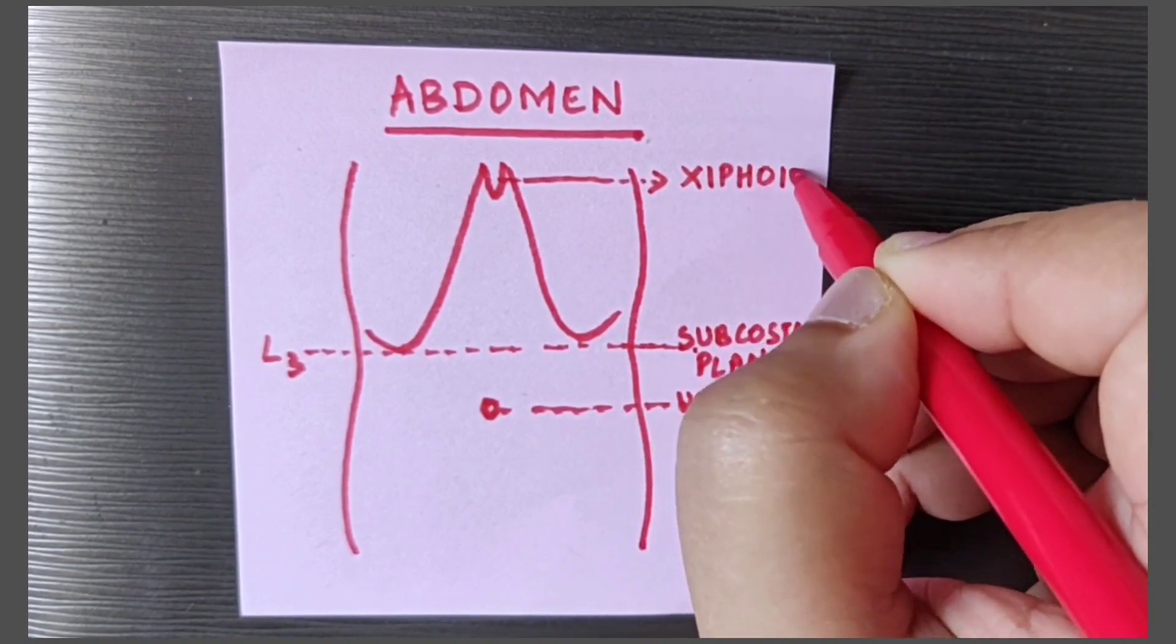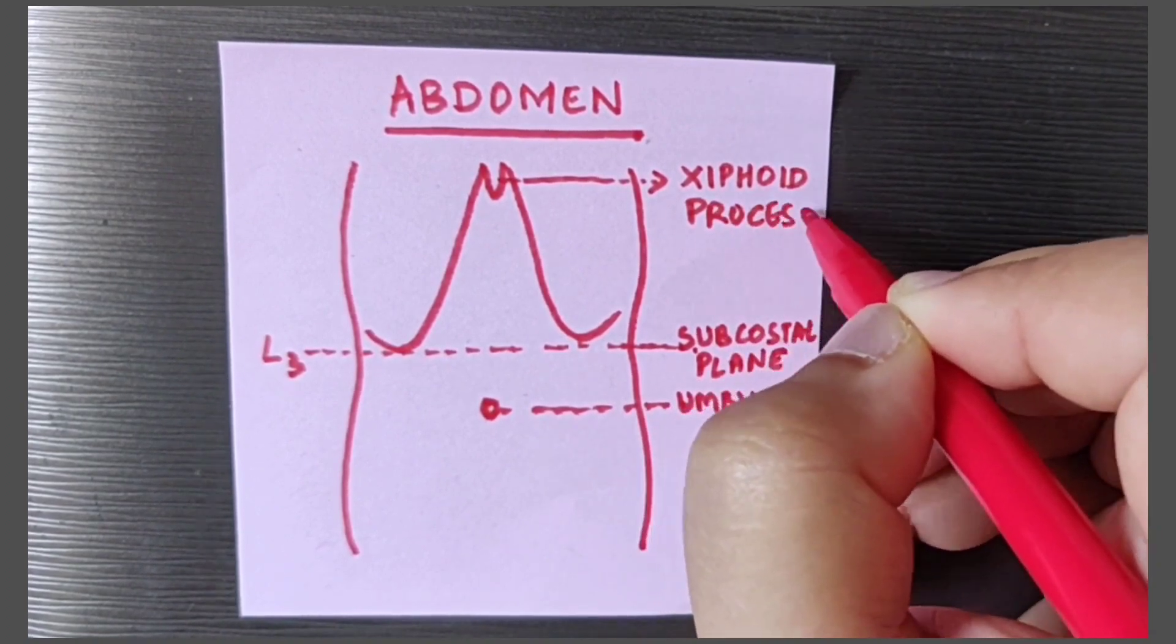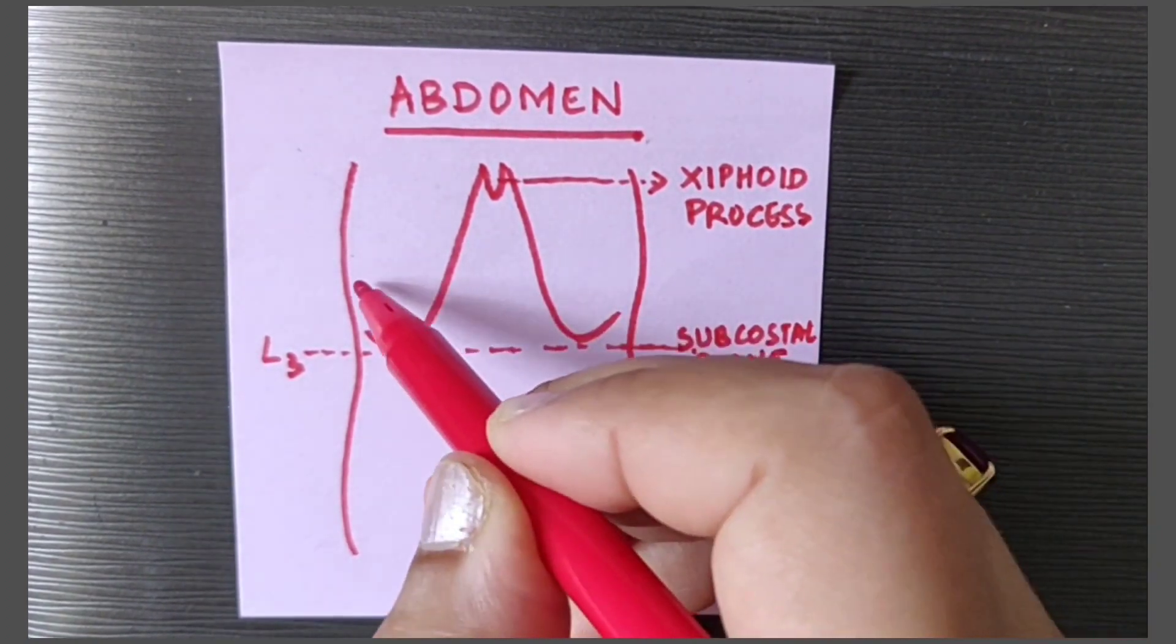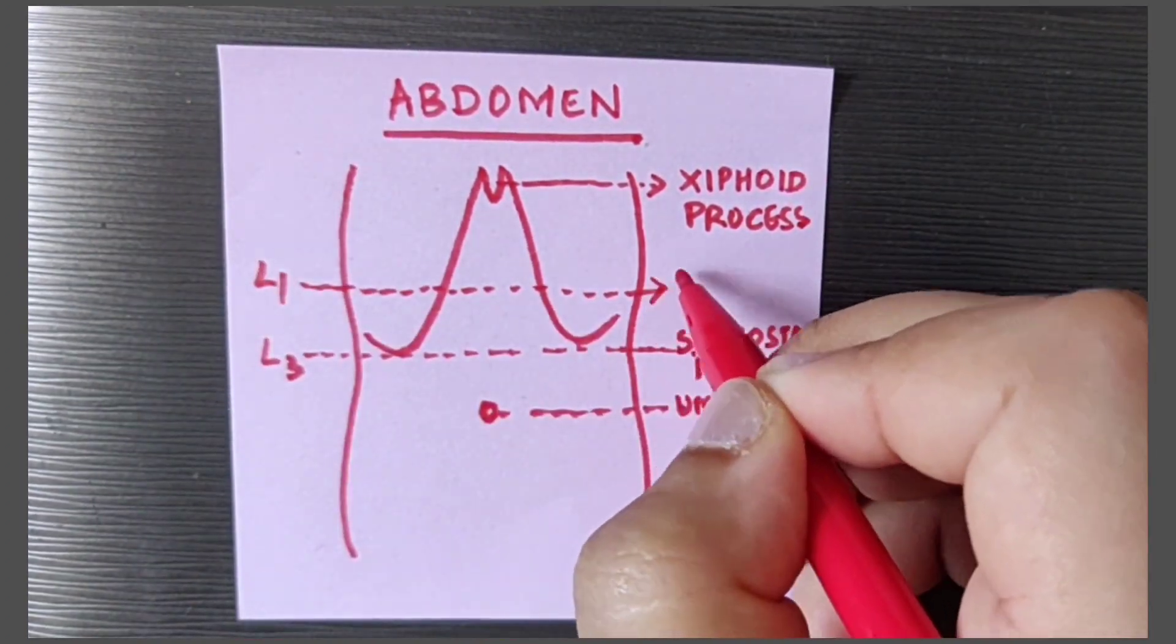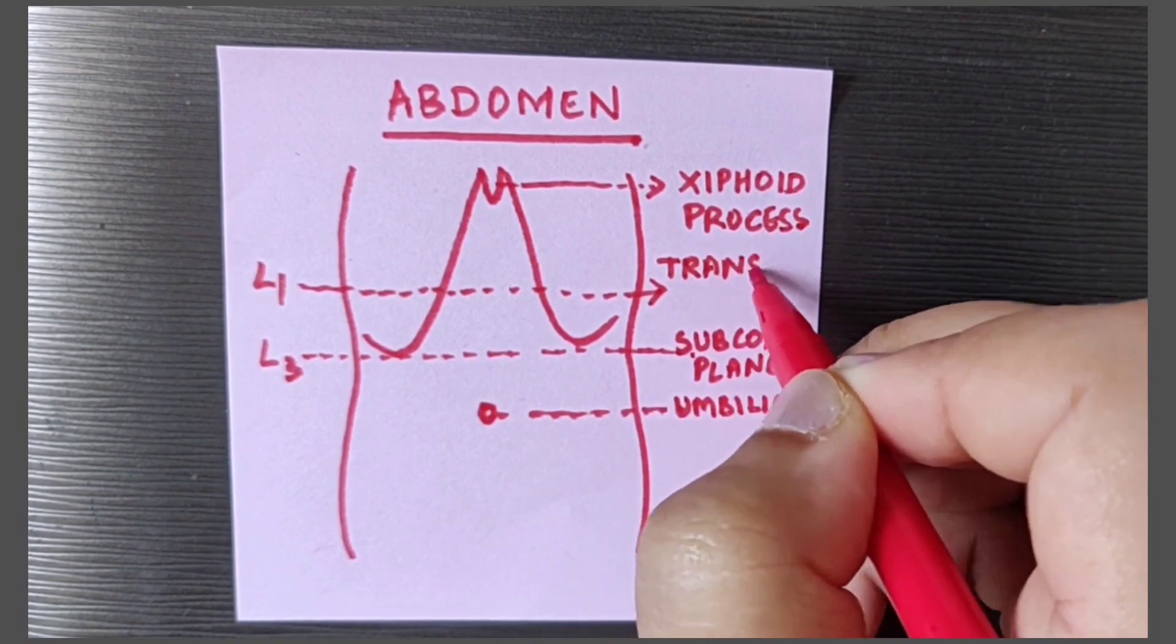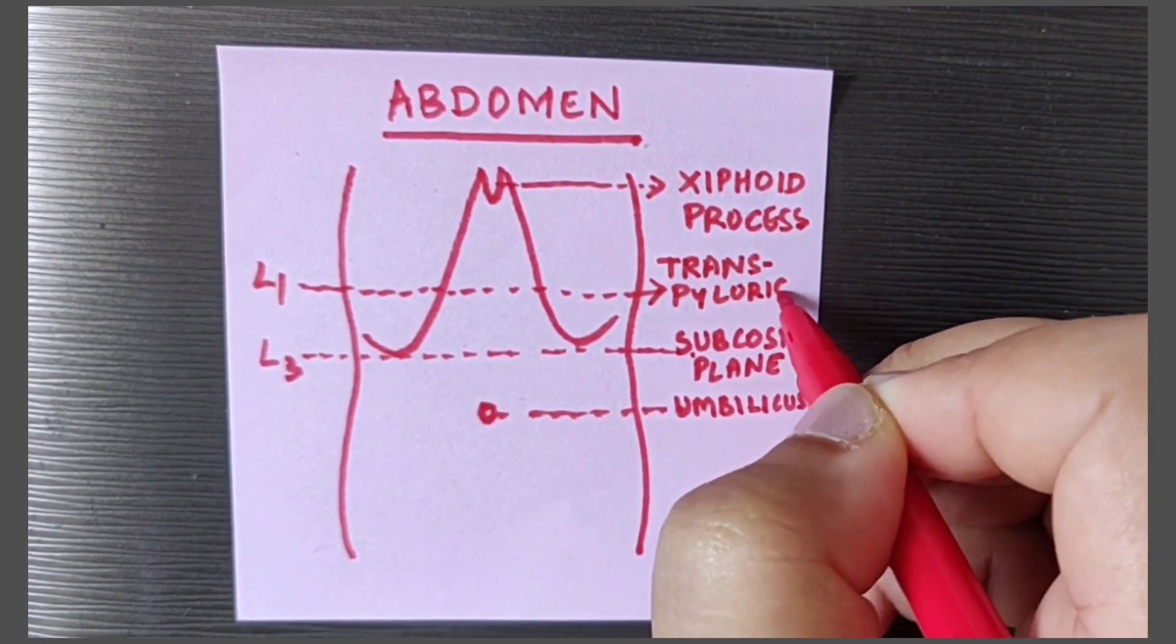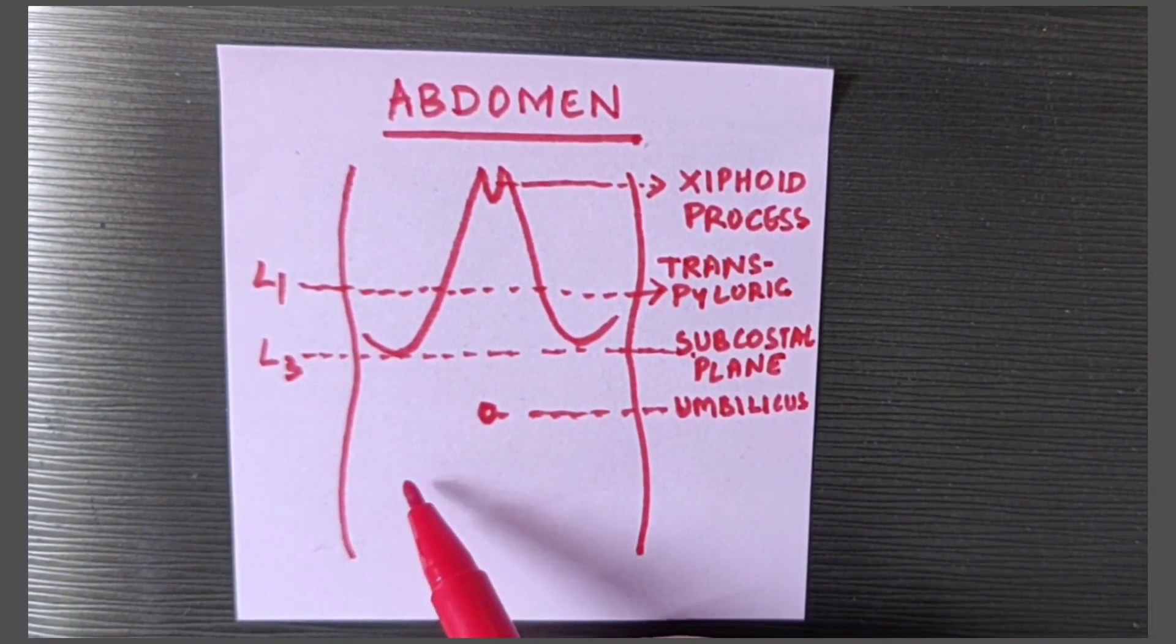Now marking the xiphoid process which is at the level of sixth costal cartilage or the ninth thoracic vertebra. There's another plane midway between the xiphoid process and the umbilicus which is called as the transpyloric plane at the level of first lumbar vertebra.